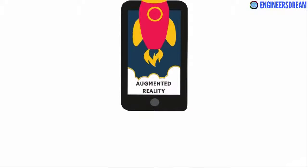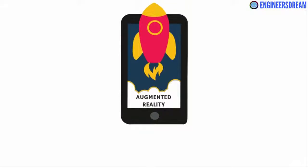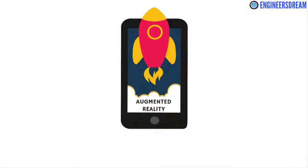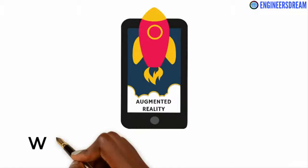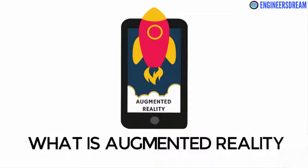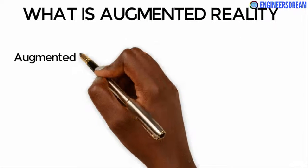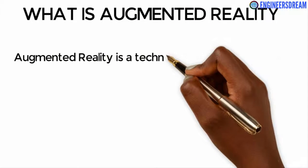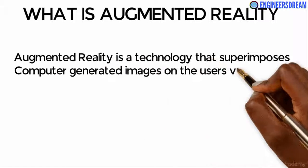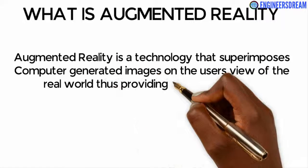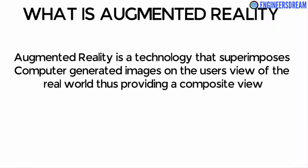Welcome back. In this video I'll explain the concept of augmented reality. According to Wikipedia's definition, augmented reality is a technology that superimposes computer generated images on a user's view of the real world, thus providing a composite view.